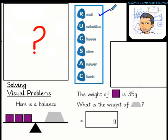So let's underline any key information. We have one purple brick is 35 grams and three purple bricks is the same as a grey weight.